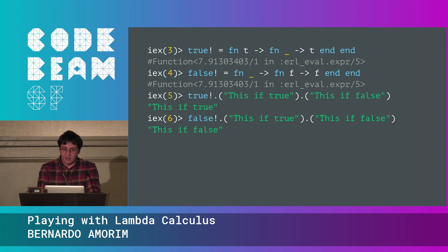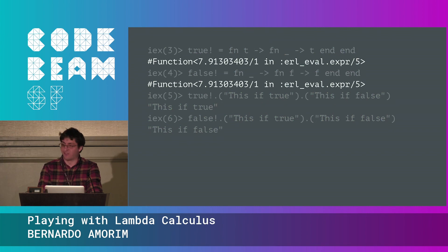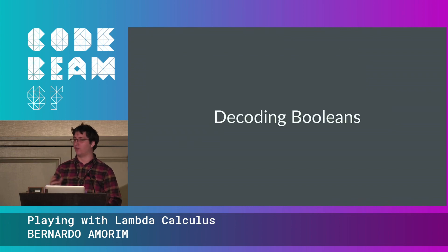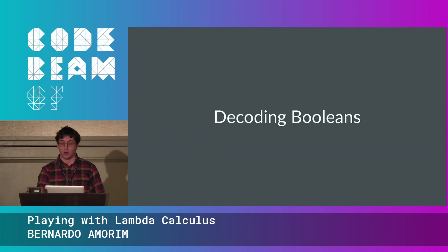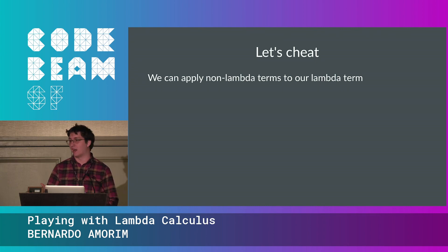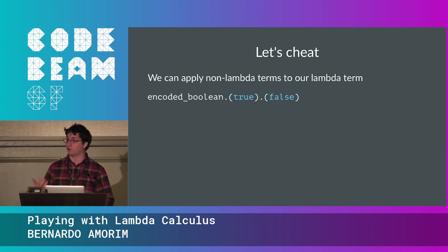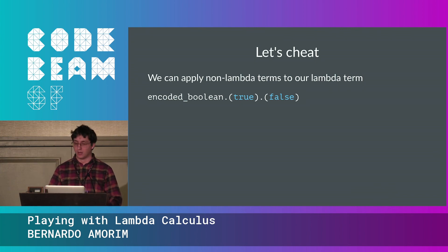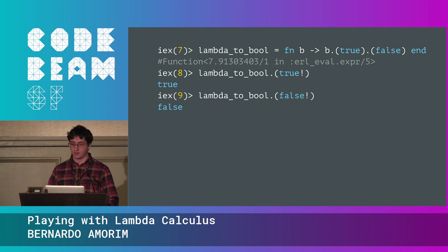There's a problem: true and false just return functions, which isn't very helpful for checking results. We'll cheat slightly — since we're in Elixir land, we can apply known non-lambda atoms to our encoded boolean. We apply the atoms 'true' and 'false' to the encoded boolean, and it chooses the correct atom. Implementing this in the shell confirms: true is true, false is false. No mistakes so far.